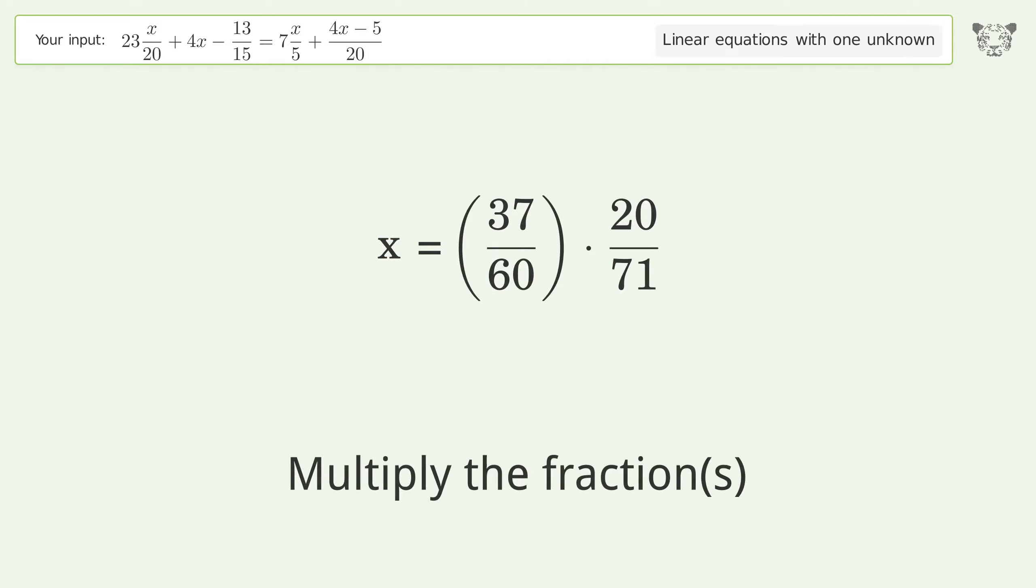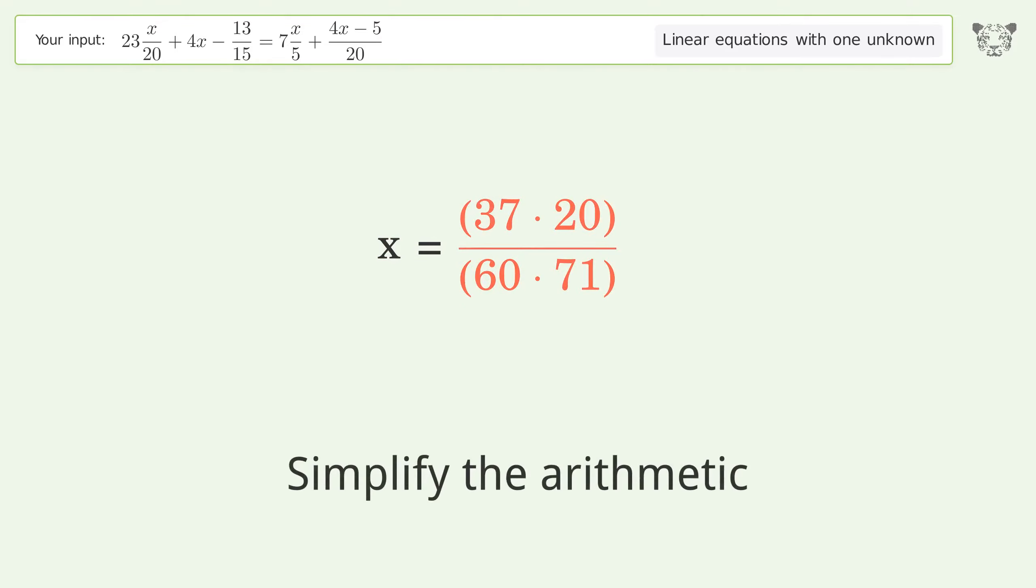Combine the numerators, multiply the fractions. Simplify the arithmetic. And so the final result is x equals 37 over 213.